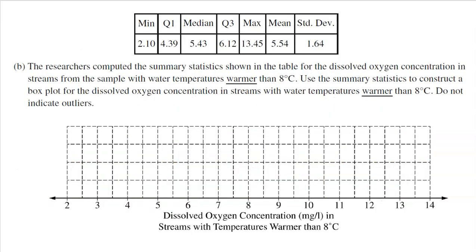All right, part B. The researchers computed the summary statistics shown in the table for the dissolved oxygen concentrations in streams from the sample with water temperatures warmer than 8 degrees. Use the summary statistics to construct a box plot for the dissolved oxygen concentration in streams with water temperatures warmer than 8 degrees. Do not indicate outliers. I thought that was actually really strange for the AP exam to do that because usually they're all about making sure you know how to find outliers. But hey, less work for you.